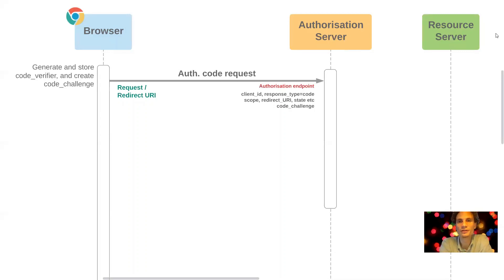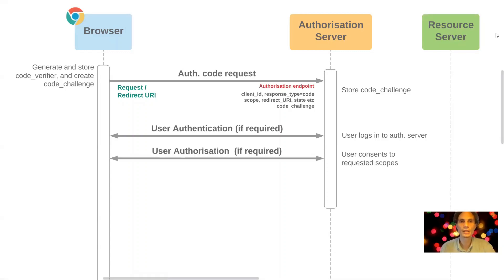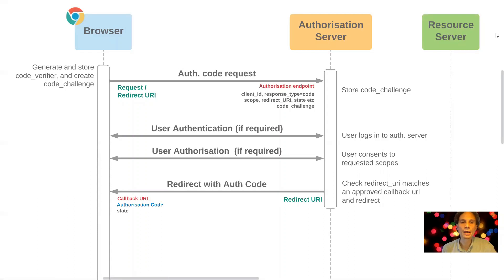Specifically for this flow, a code challenge — the hashed value of the code verifier — is also included. The authorization server stores this code challenge to be checked later in the flow. It checks if the user is logged in, prompts authentication if not, checks if the user has approved the requested scopes, verifies the redirect URI matches an allowed callback URL, and then redirects the browser with the auth code and state as parameters to the callback URL.